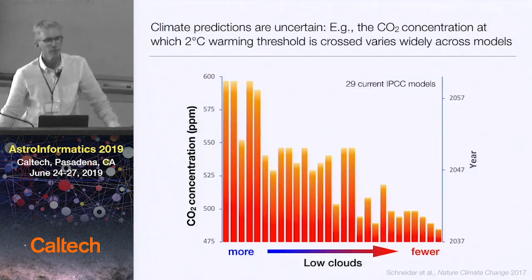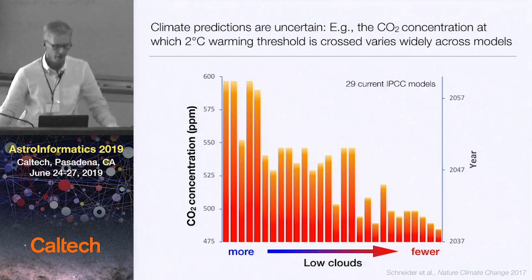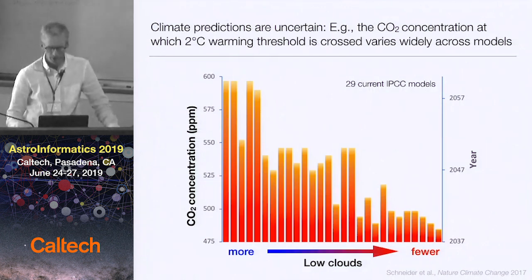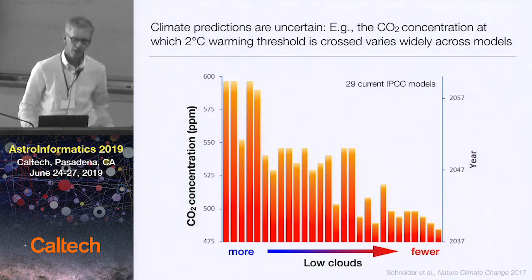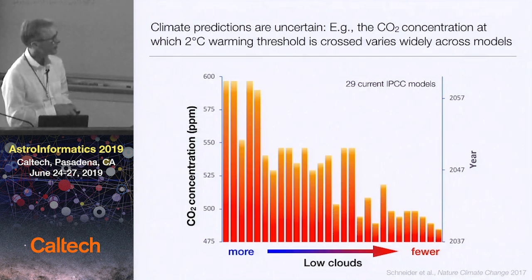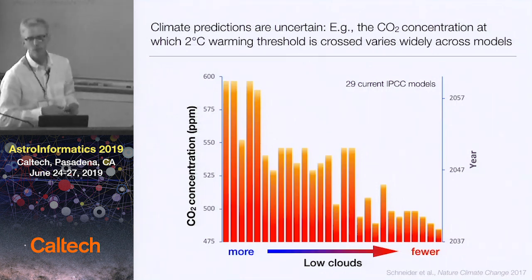Here is what current climate models tell you when you ask a relatively simple question. You've heard about the Paris Agreement — 196 countries agreed that warming should be limited to two degrees above pre-industrial levels. We've had about one degree of warming in the global mean so far, so there's about one degree more to go. There are 29 models that went into the last IPCC report. Some models suggest that at around 480 parts per million CO2, you've crossed this two-degree threshold. Other models suggest you can go almost to 600 parts per million.